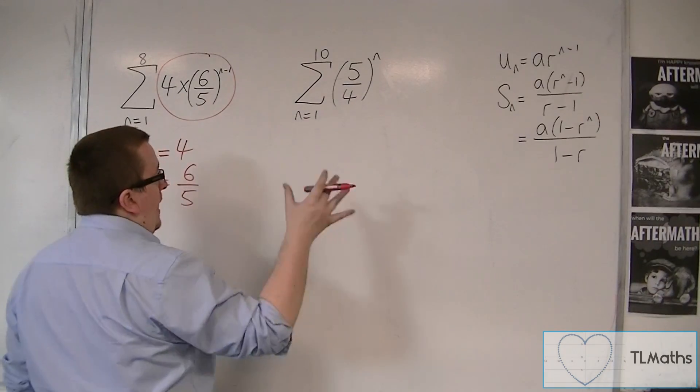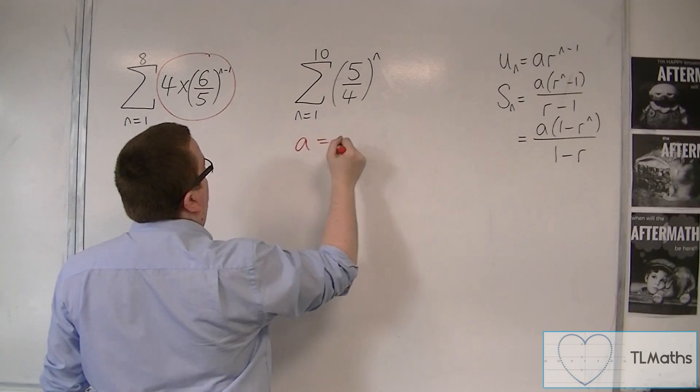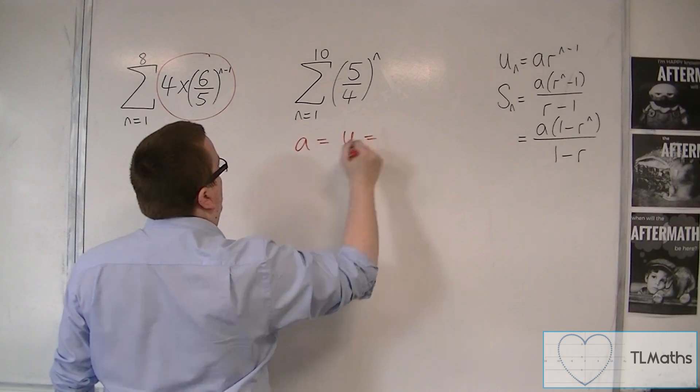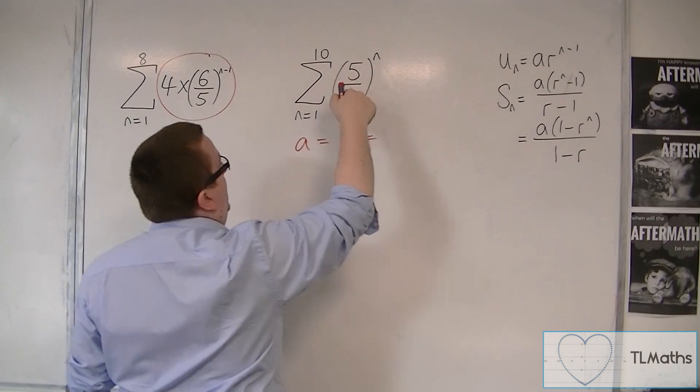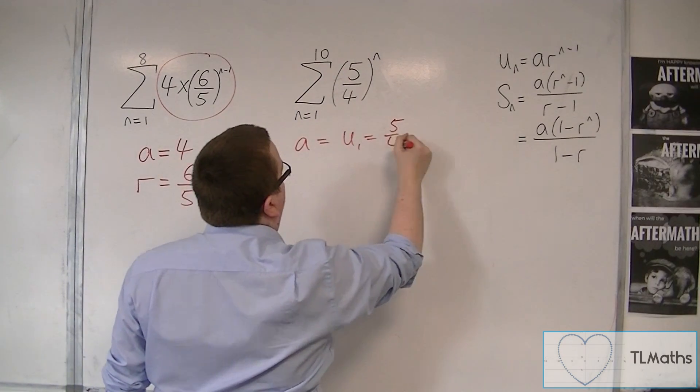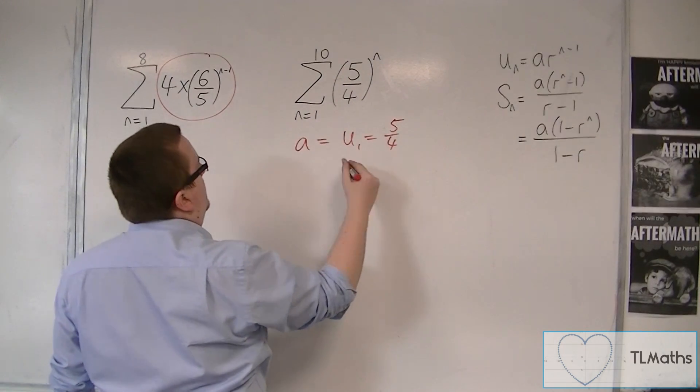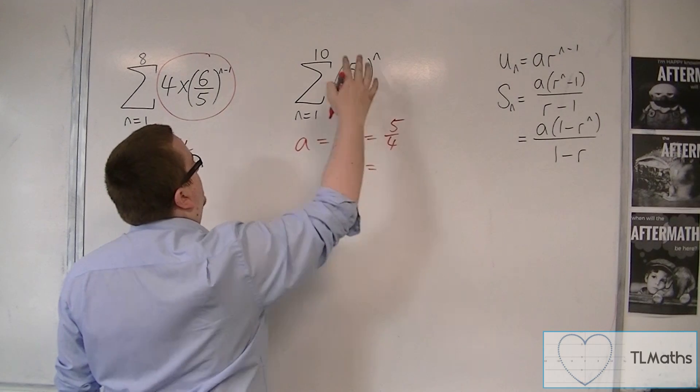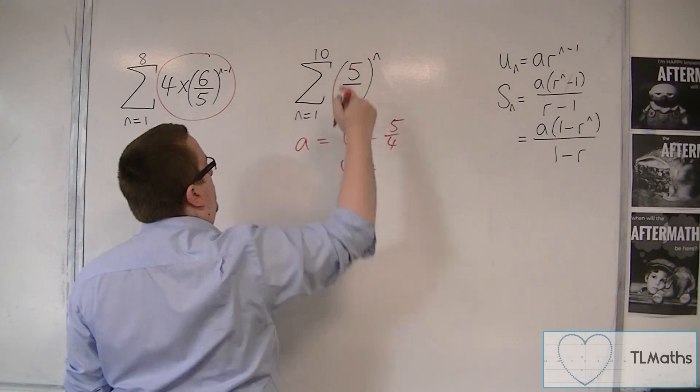So we need to identify a. Okay, so that's u1. So that's when n is 1. So you'd have 5 quarters to the 1, so just 5 quarters. And then u2 is going to be 5 quarters to the power of 2.